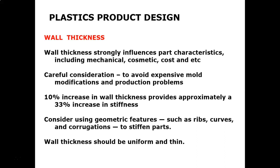Wall thickness strongly influences many key part characteristics including mechanical performance and feel, cosmetic appearance, moldability, and economy. The optimum thickness is often a balance between opposing tendencies such as strength versus weight, or durability versus cost. Give wall thickness careful consideration at the design stage to avoid expensive mold modifications and molding problems in production. In a simple flat wall section, a 10% increase in wall thickness will provide approximately a 33% increase in stiffness. However, increasing wall thickness also adds to part weight, cycle time, and material cost.